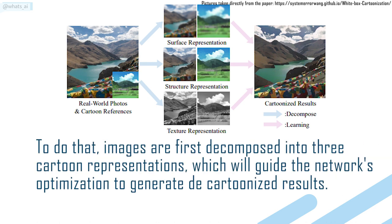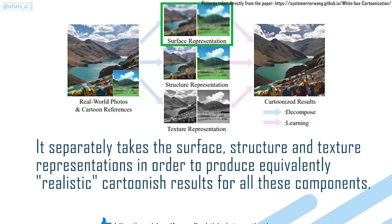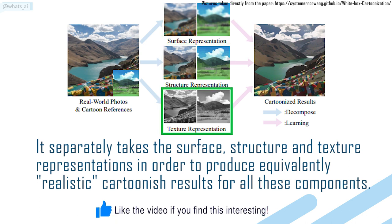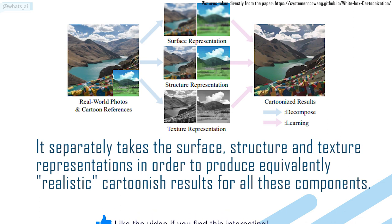To do that, images are first decomposed into three cartoon representations, which will guide the network's optimization to generate the cartoonized results. It separately takes the surface, structure, and texture representations in order to produce equivalently realistic cartoonish results for all these components.